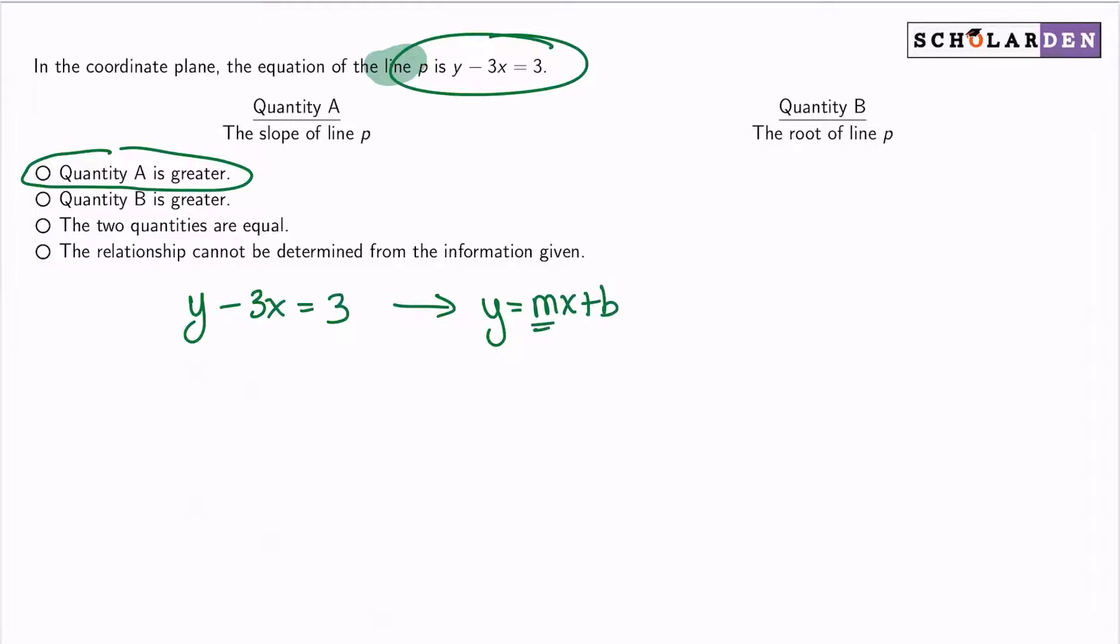So what I'll do is I'll just add 3x to both sides here. Because once I get that done, we have y equals 3x plus 3, and then I can easily identify my slope as 3. So there's my slope right there.